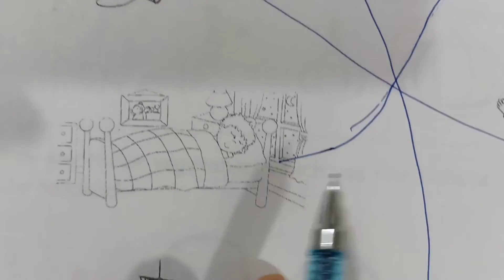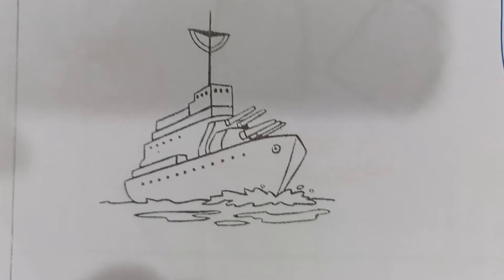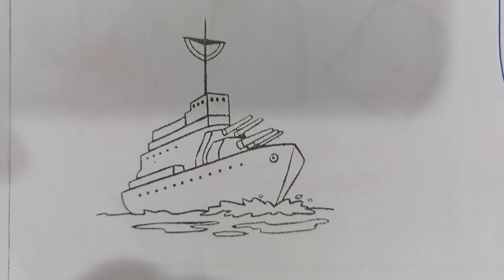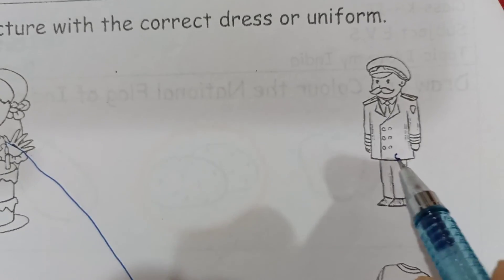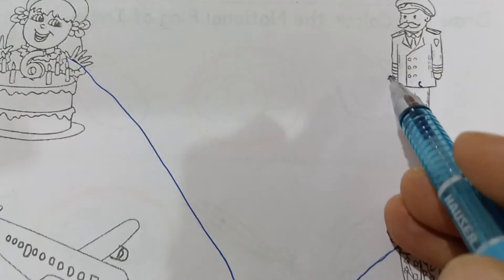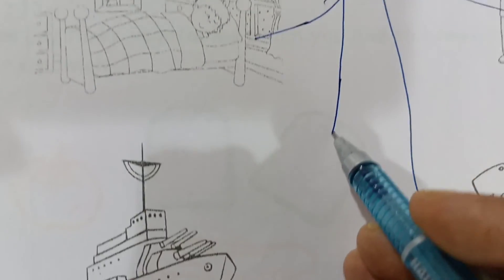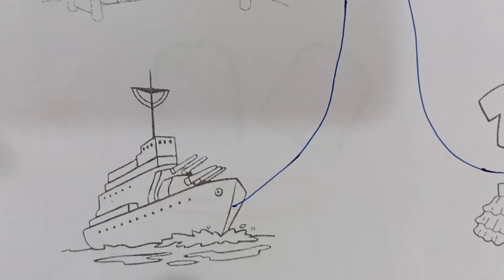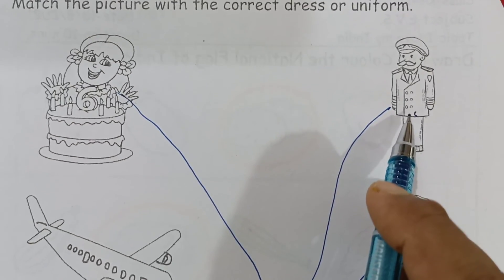Now this is the ship. So who sails the ship? This is the Navy officer. Navy officers, they go by the ship. So we will match it here, and this is the uniform of a Navy officer.